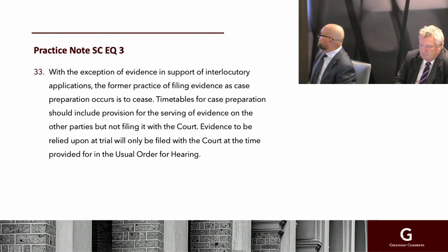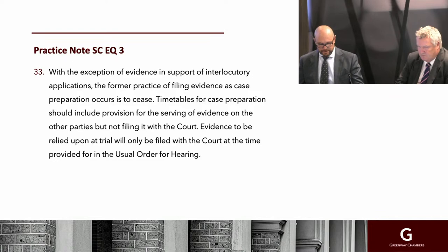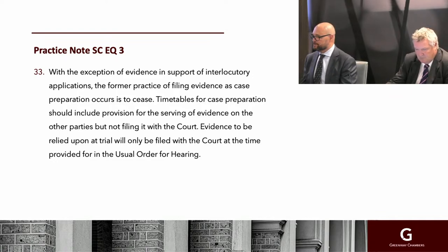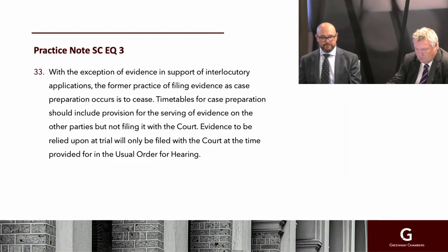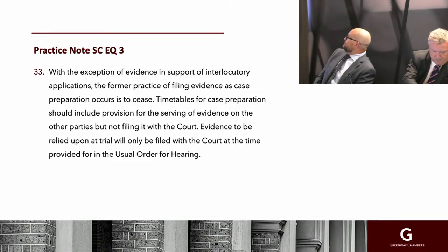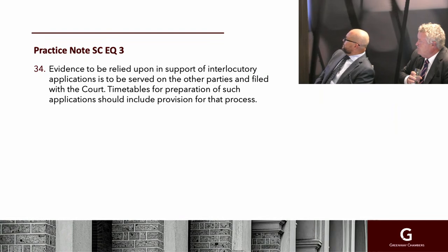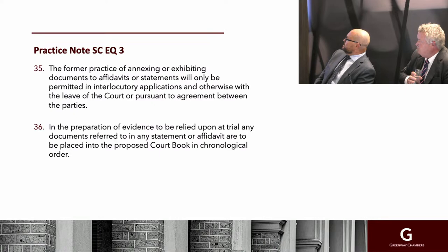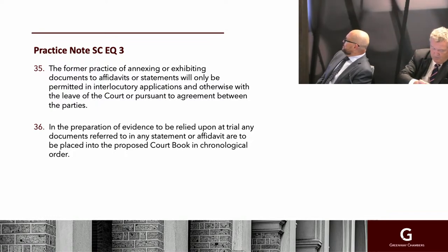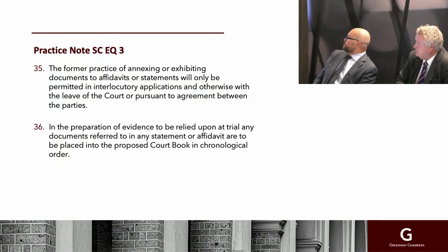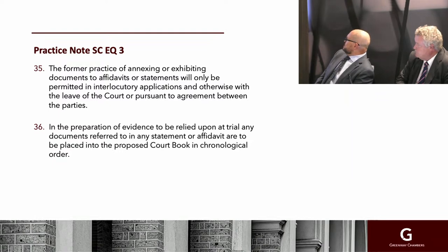The earlier you produce the court book the better, and the answer to how you do that is in the practice note. We're going to focus on paragraphs 33 to 39. Paragraphs 35 and 36 are really important: the form of annexing or exhibiting documents to affidavits will only be permitted in interlocutory applications and otherwise with leave of court or agreement between parties. Documents referred to in any affidavit are to be placed in the proposed court book in chronological order.